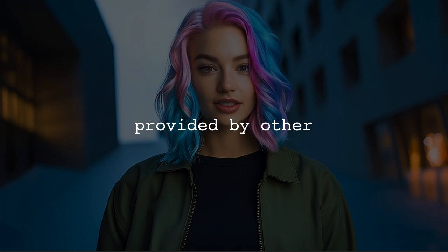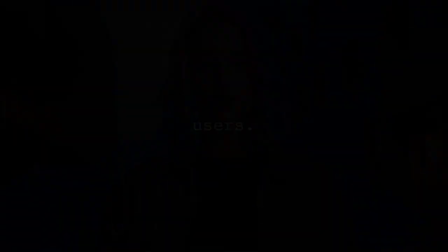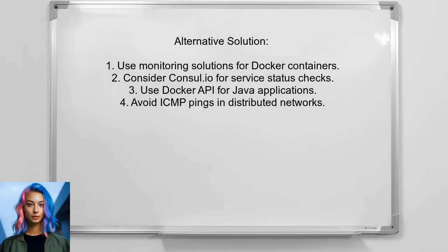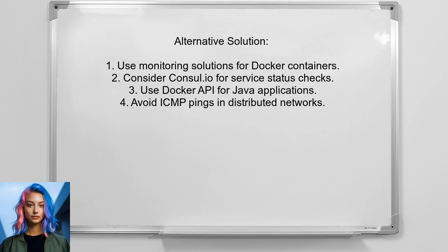Let's look at answers provided by other users. An alternative approach suggests using dedicated monitoring solutions for your Docker containers — these tools can notify you if there are any issues. If you need to integrate this into an application, consider using console.io to check service statuses instead of just container statuses. For Java applications, the Docker API library can be a better option than relying on ICMP pings, especially in distributed networks.